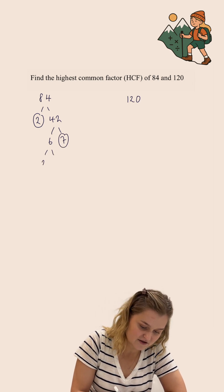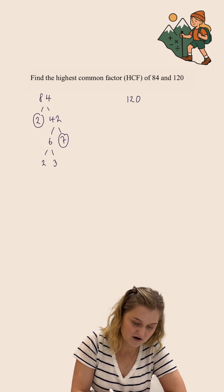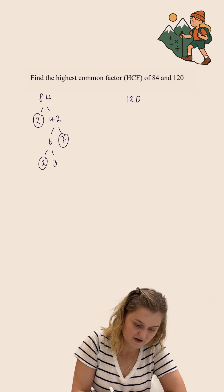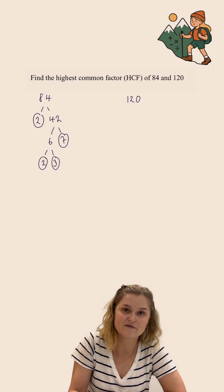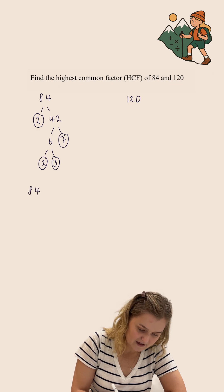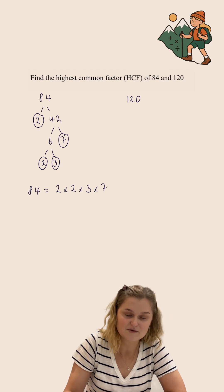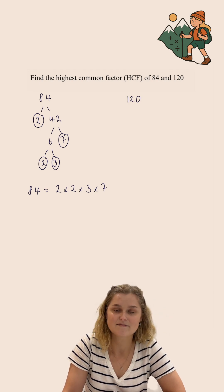6 I can split into 2 multiplied by 3. Both of these are prime so we circle both of them. So 84 is equivalent to 2 multiplied by 2 multiplied by 3 multiplied by 7.